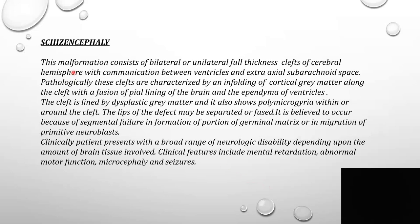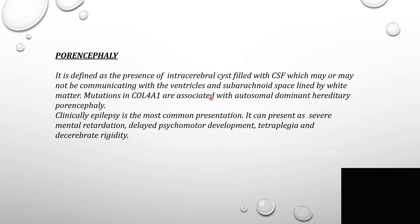Schizencephaly involves bilateral or unilateral full-thickness clefts of the cerebral hemisphere. Pathologically, these clefts are characterized by an infolding of cortical gray matter along the cleft, with a fusion of the pial lining of the brain and deep ependyma of the ventricle, and the clefts are lined by dysplastic gray matter. Porencephaly is the presence of intracerebral fluid-filled cysts within the CSF, lined by white matter.